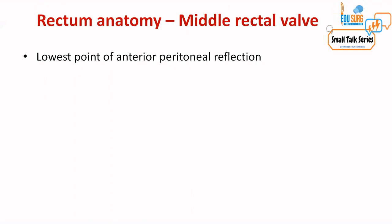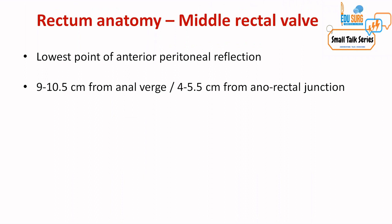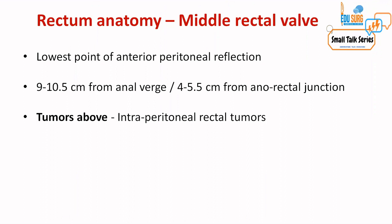Now, the importance of the middle rectal valve: the middle rectal valve is 8 to 10 centimeters from the anal verge, or 4.5 to 5 centimeters from the puborectalis sling or the anorectal junction. This point is important because it marks the lowest point of the anterior peritoneal reflection. Let's see this in the upcoming image.